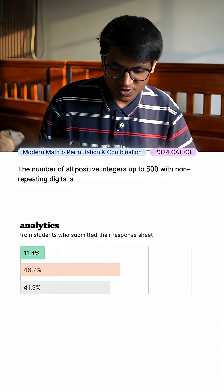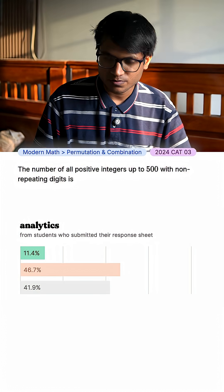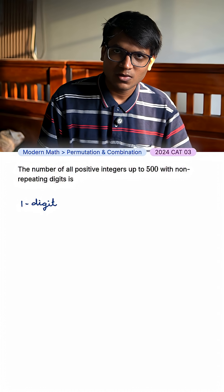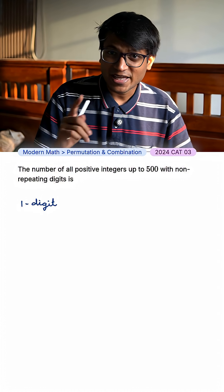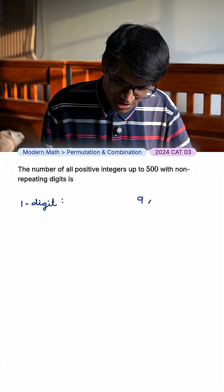The number of all positive integers up to 500 with non-repeating digits is. So if I have a single digit number, I can have 1 to 9. I cannot put a 0 because the question says positive integers. I have 9 cases.